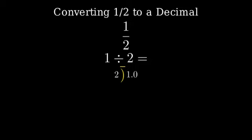Notice that we've added a decimal point and a zero after the one. This is because we're working with a whole number, and adding the decimal allows us to continue the division beyond the whole number.